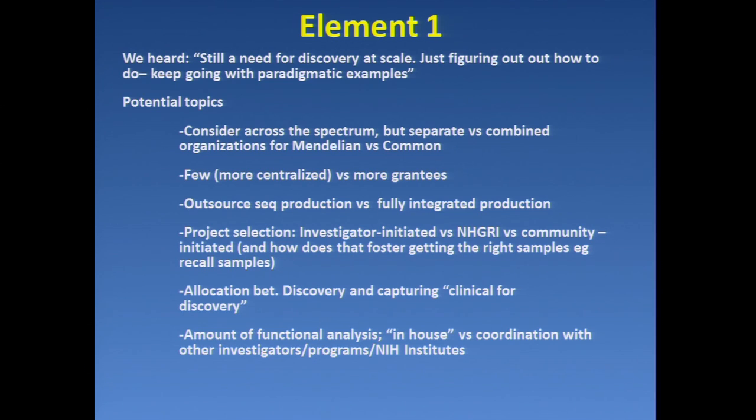Launching right into the topics: we need to consider everything across the spectrum. I heard David Altschuler say that the current organization — big centers for common disease, and very focused Mendelian centers — shouldn't stay that way because it doesn't go with where the science is going. On the other side, I'm very worried that if there isn't some organizational way to focus on the Mendelians, we'll actually lose focus on those. So I'd like to hear some pros and cons on that.